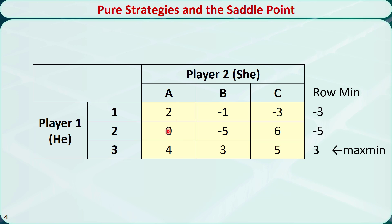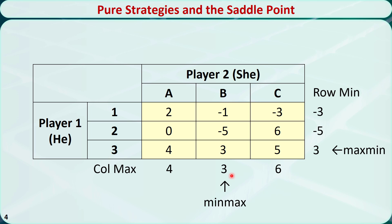For player 2, if she chooses strategy A, then player 1 will choose strategy 3 to win $4. Note that 4 is the largest number in column 1. If player 2 chooses strategy B, then player 1 will choose strategy 3 to win $3. 3 is the largest number in column 2. If player 2 chooses strategy C, then player 1 will choose strategy 2 to win $6. 6 is the largest number in column 3. Out of these three possible outcomes, player 2 should choose a strategy so that player 1 will win the smallest amount from her. It is 3, which is the minimum of the column maximums. Therefore, the best strategy for player 2 is strategy B. By choosing strategy B, player 2 can ensure that player 1 will win at most $3.